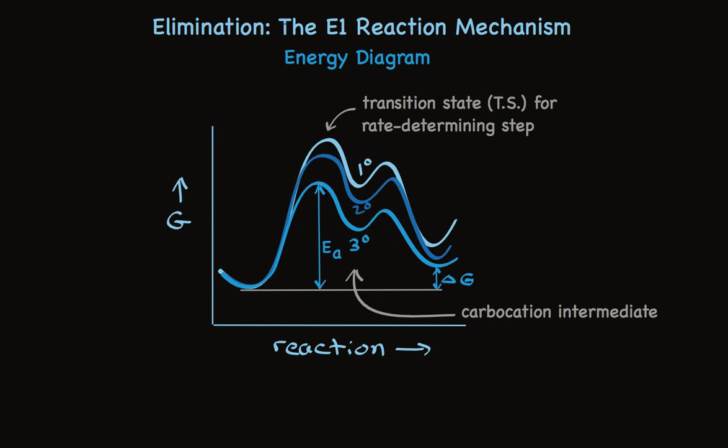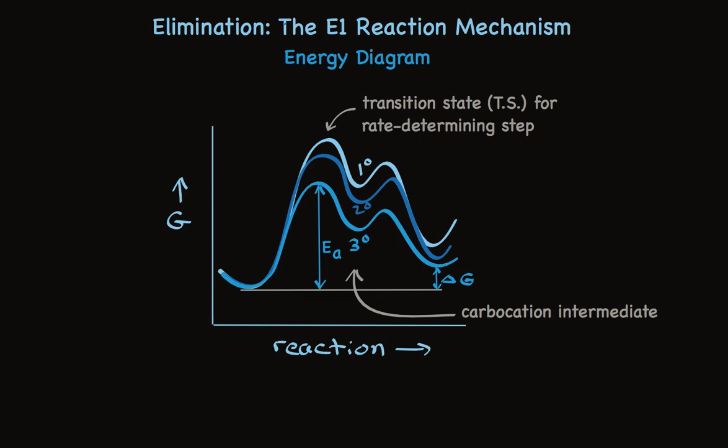Now that we've looked at all this, we can list several characteristics of the E1 elimination reaction. So here's our mechanism, and we know that the first step is the slow step, rate-determining. The intermediate carbocation rather rapidly loses the proton to make the alkene.